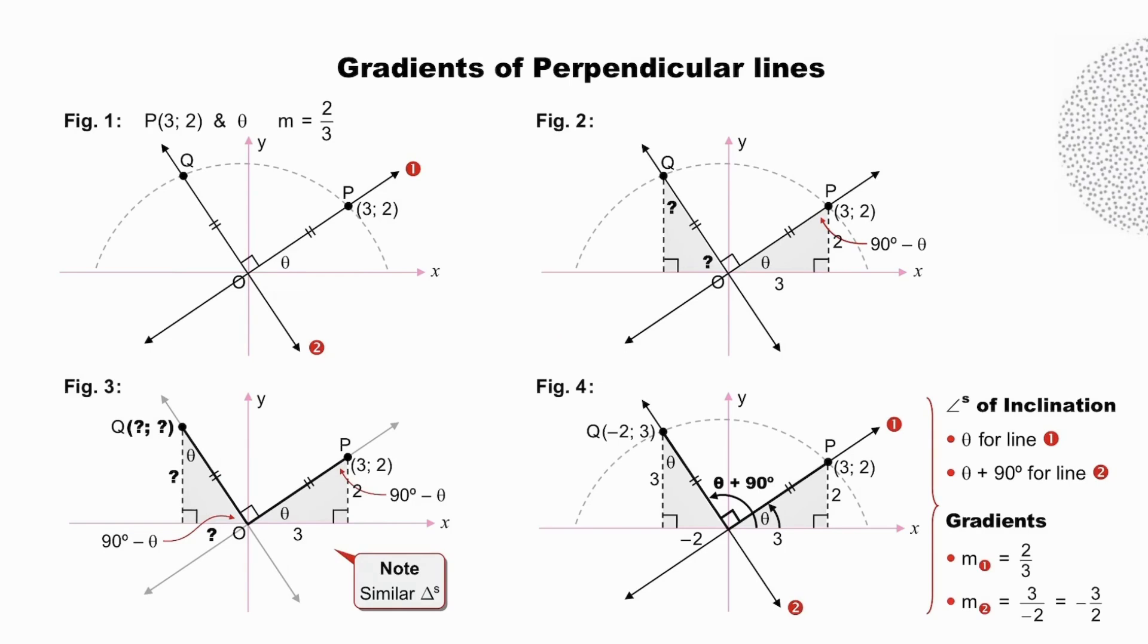When you get to figure 4, you notice three things: that because of the similarity of the triangles, this value is -2, that value is 3, and therefore the coordinates of Q are (-2, 3). Compare these coordinates to the coordinates of P. We notice that they are swapped and opposite in sign, resulting in the fact that the gradient of line 2 is equal to -3/2, as opposed to the gradient of line 1, which was 2/3. Mission accomplished.